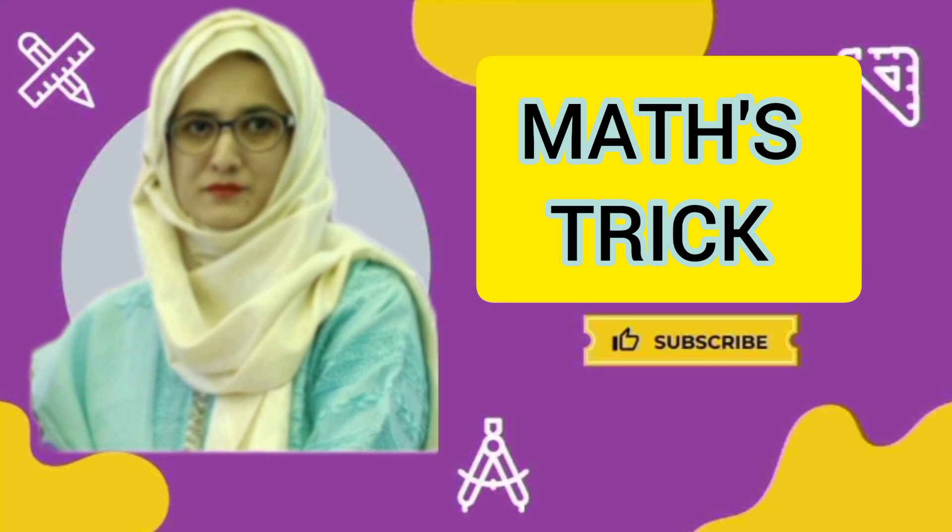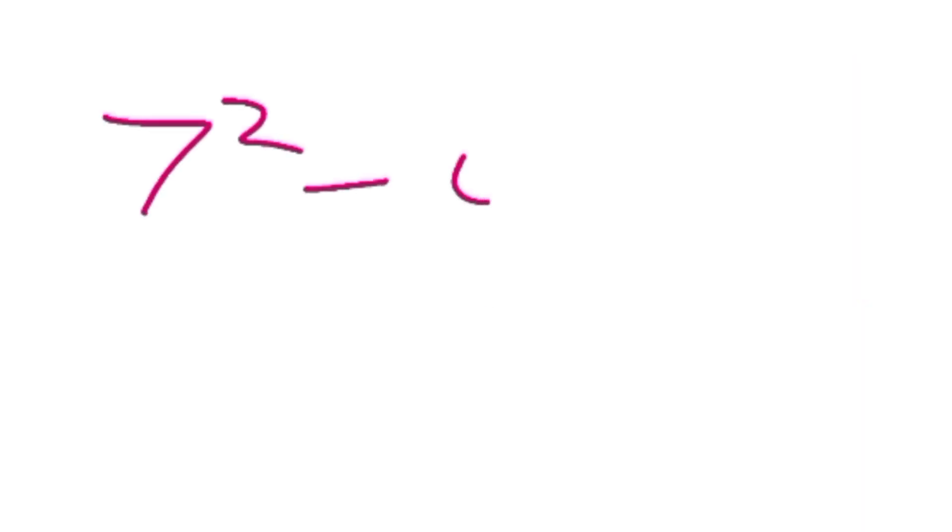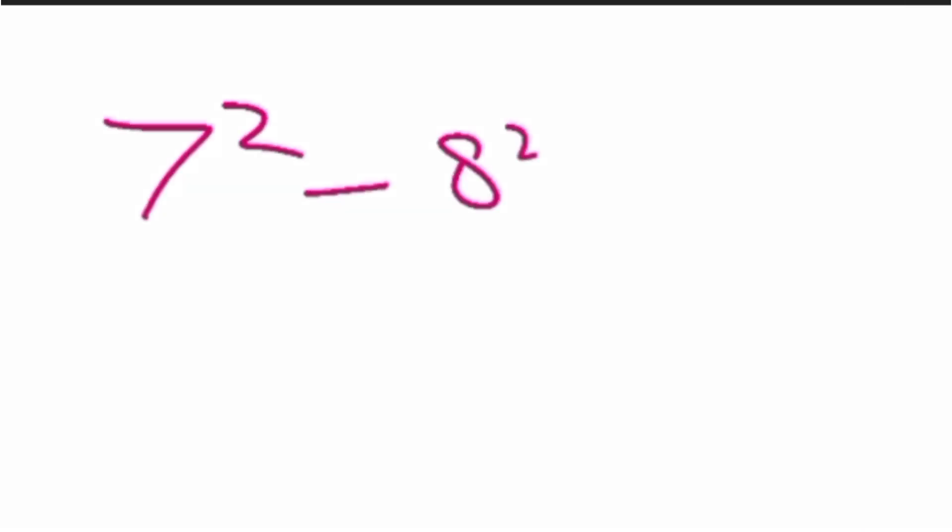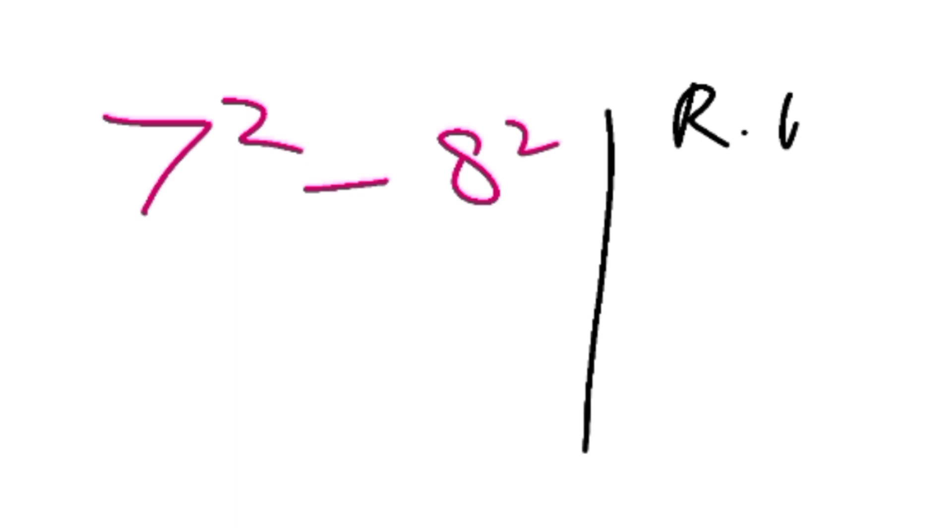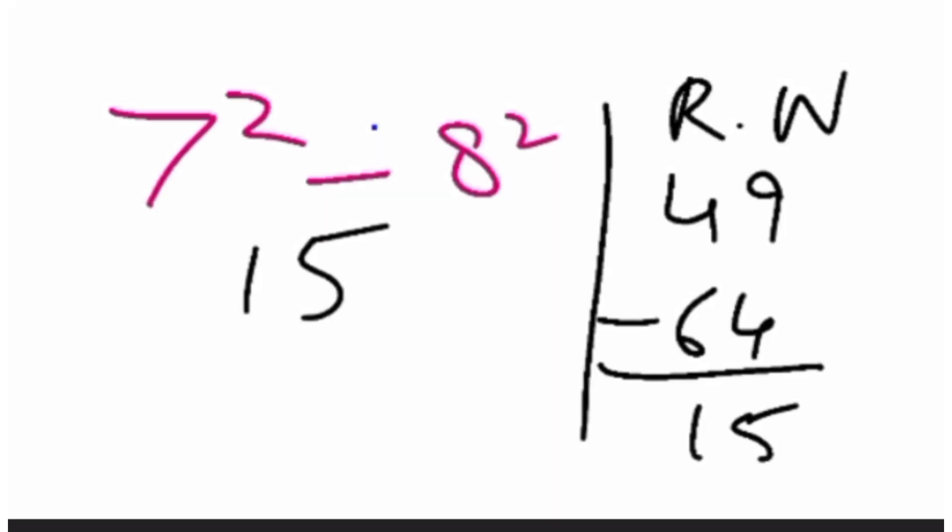Assalamualaikum viewers, today in this video we are going to learn a math trick. If we have a question like 7 square minus 8 square, I know what you will do. You will find out the square of both values and then minus them. You will find the square of 7 is 49 and the square of 8 is 64, and then minus them and you will get the answer 15.